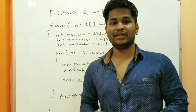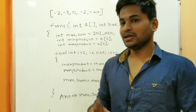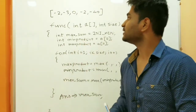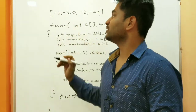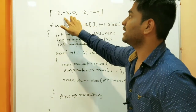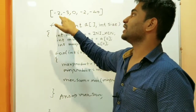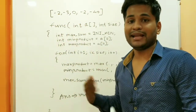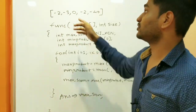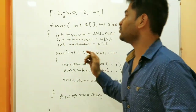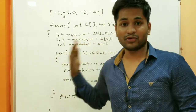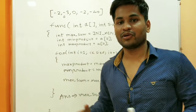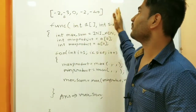The important thing to understand is that we need to maintain two variables: minimum product and maximum product. We use minimum product because it can happen that a previous element is -3 and the next is -2. When two negatives multiply, they can give a large positive number like 6, so we must track the minimum as well as the maximum product.